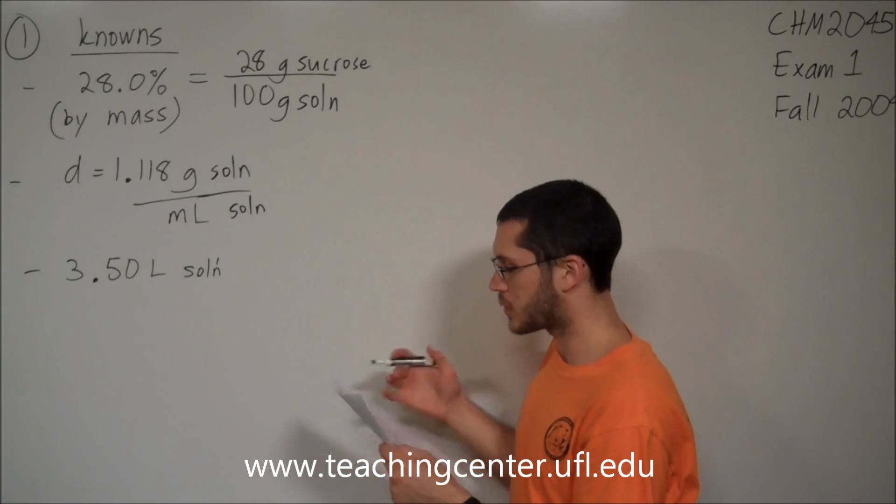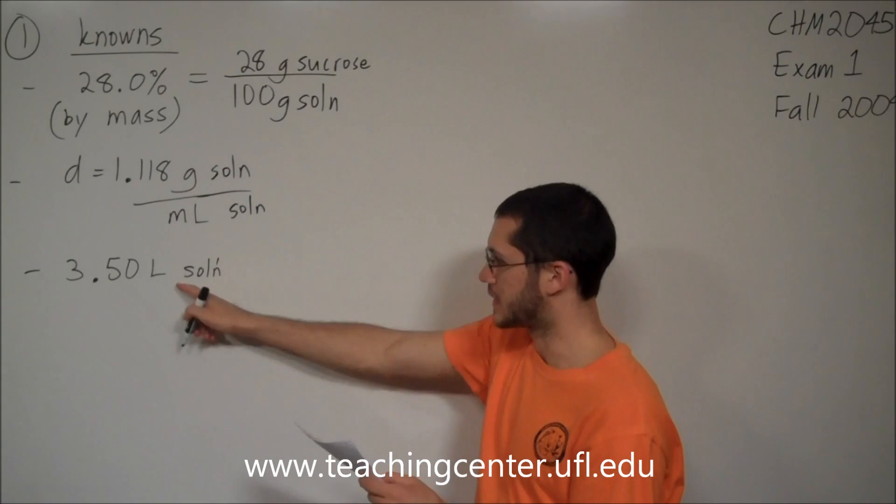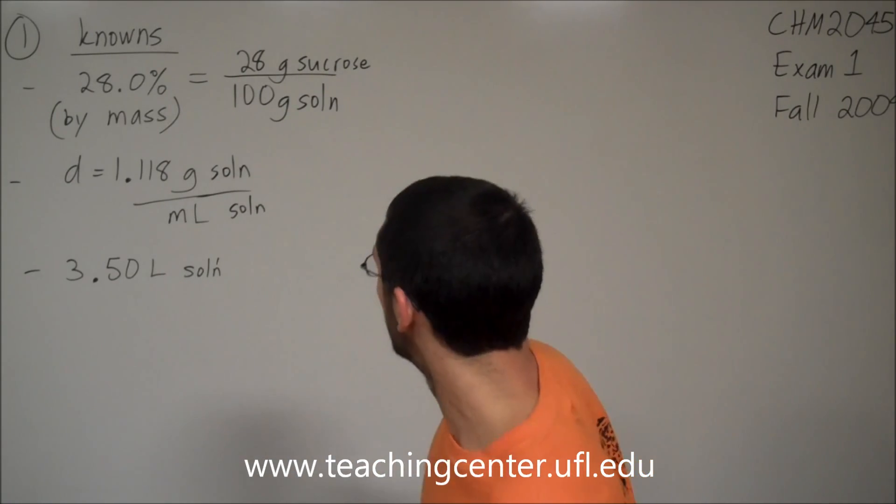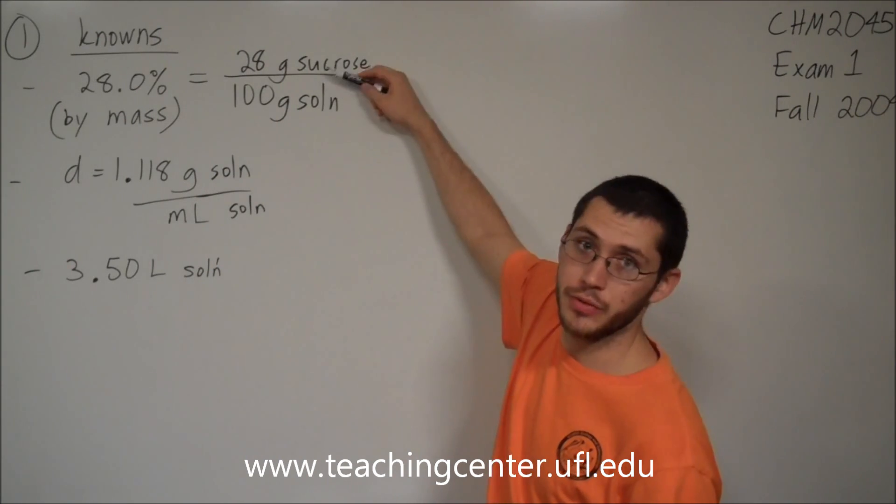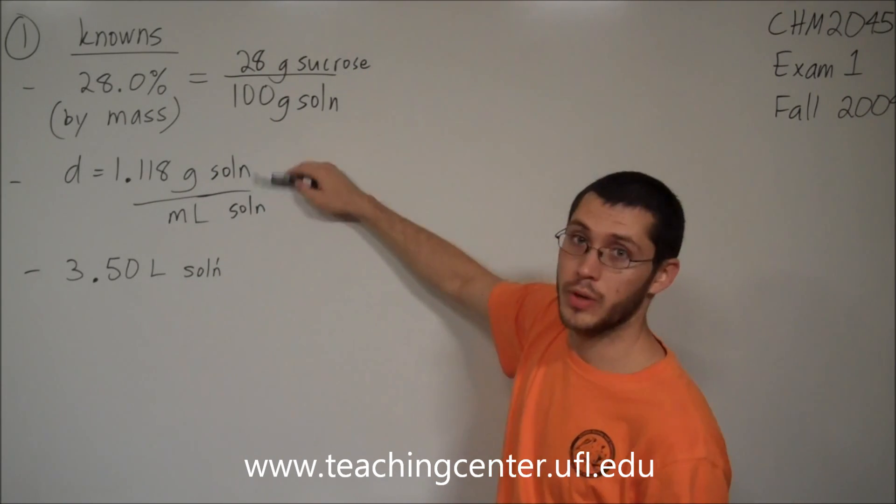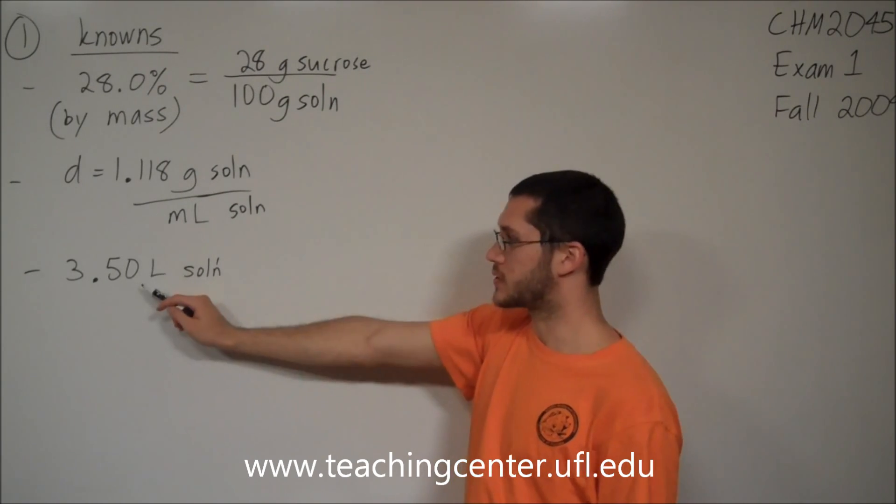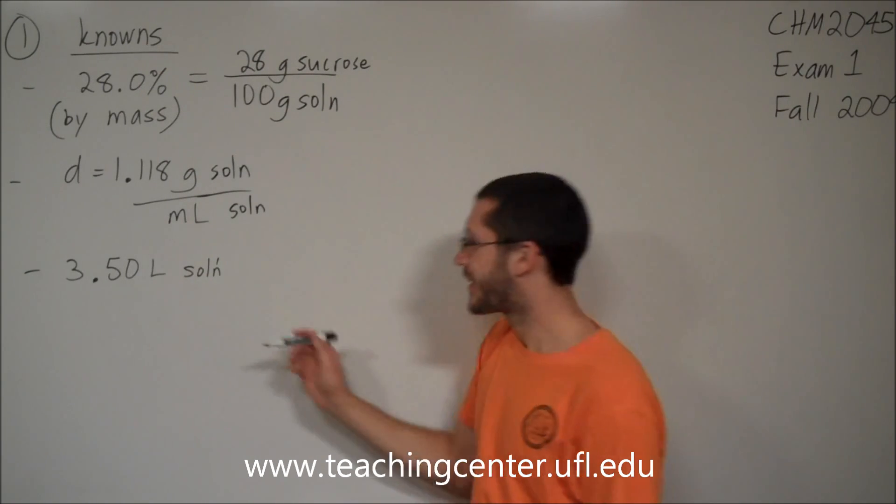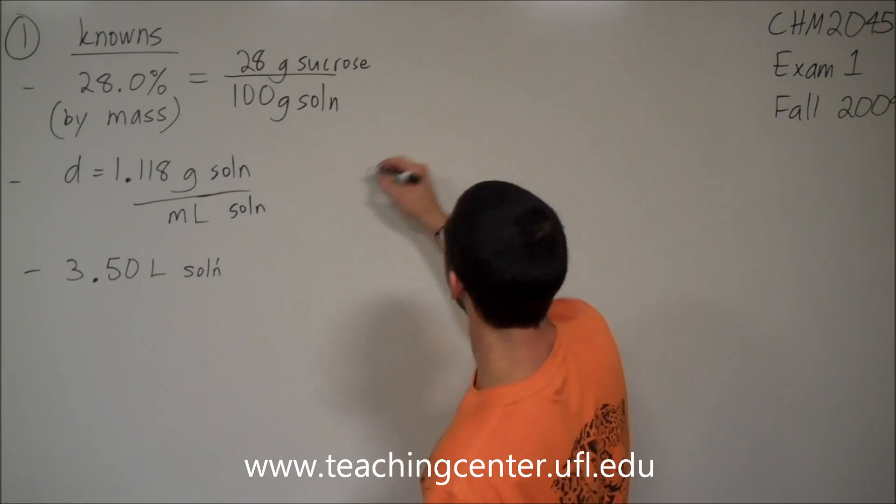Now we're looking for the mass of sucrose in grams contained in this amount of solution. So we see that this is a conversion because it's a ratio of two things. And this is a conversion, a ratio of two things. But this is not. This says, use me. So we'll use you since that's what you tell me to do. Here we go.